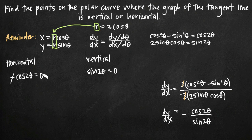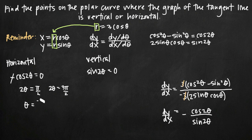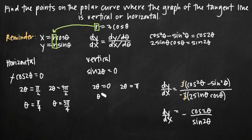Cosine equals zero when theta equals pi/2 or 3pi/2, so 2theta equals pi/2 or 2theta equals 3pi/2. Dividing by 2 gives theta equals pi/4 and theta equals 3pi/4 for horizontal tangent lines. For vertical tangent lines, sine equals zero when theta is 0 or pi, so 2theta equals 0 or 2theta equals pi, giving theta equals 0 and theta equals pi/2. These four angles are where the function has either a vertical or horizontal tangent line.